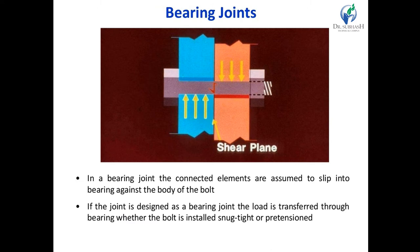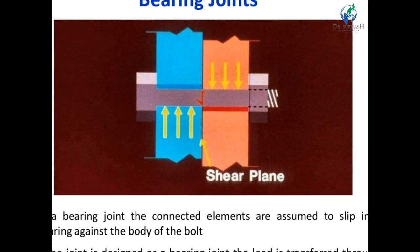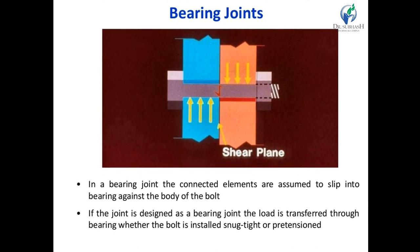What is a bearing joint? In a bearing joint, the connected elements are assumed to slip into bearing against the body of the bolt. If the joint is designed as a bearing joint, the load is transferred through bearing, where the bolt is installed tight. As shown in the figure, these are the shear plate against the bearing plate. We check two failure modes: either the bolt fails in shearing or the bolt fails in bearing. We can design as per this failure of joints.